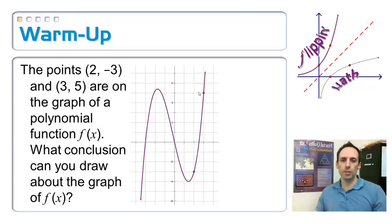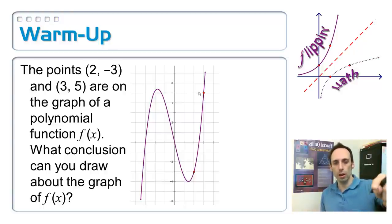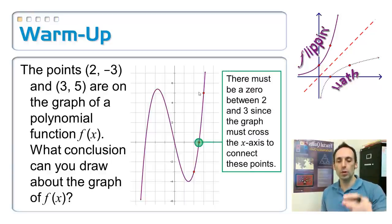What this means is the graph has to connect between those two dots. Now there's tons of ways that these two points could have been connected, but here's one of them. In order to connect those two dots, it has to cross the x-axis. That's a key point. If I have two values on my graph, one above the x-axis, one below, your graph has to cross the x-axis to get from one to the other. That's a key thing about today's lesson.